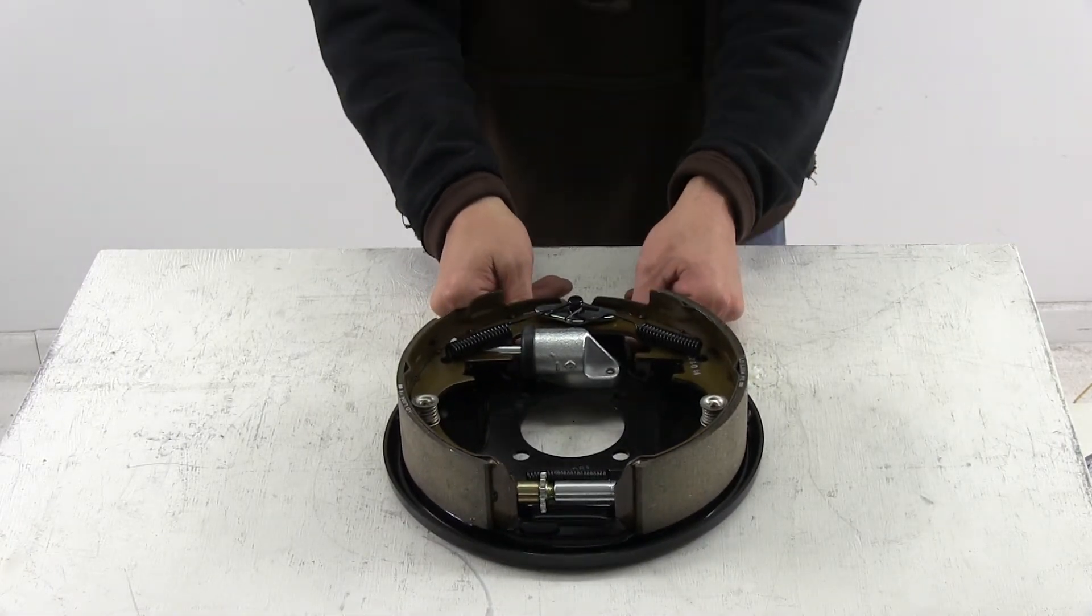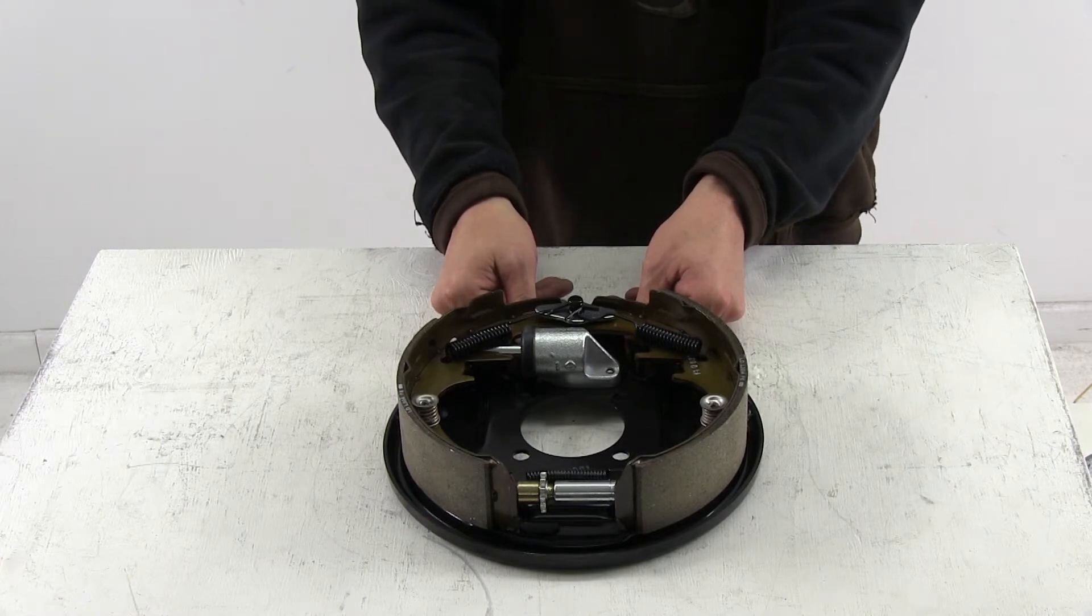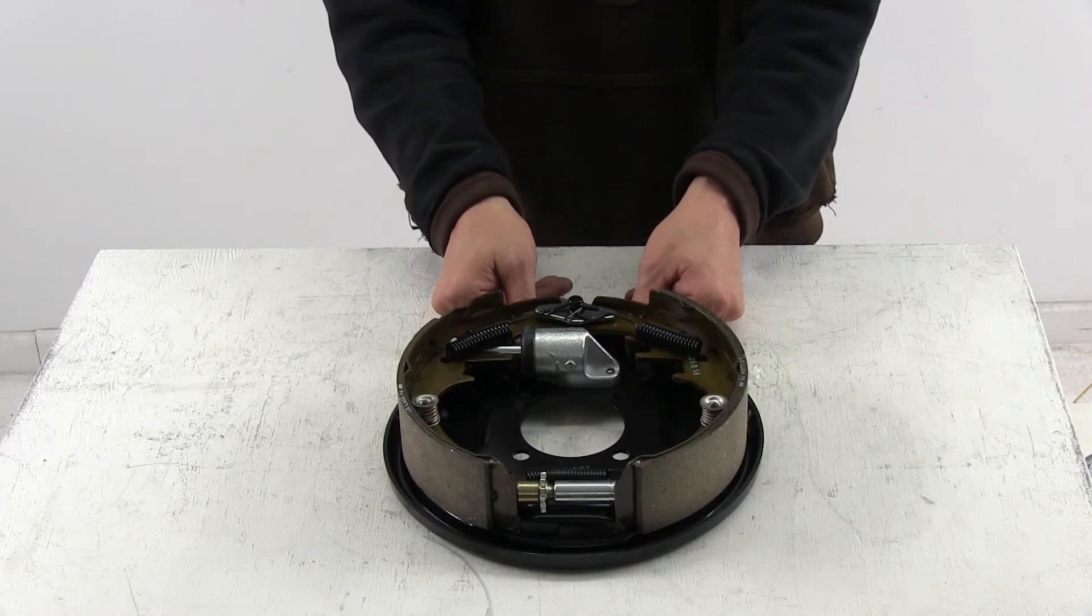And there you have it for our Titan Hydraulic Brake Assembly part number T1878000.